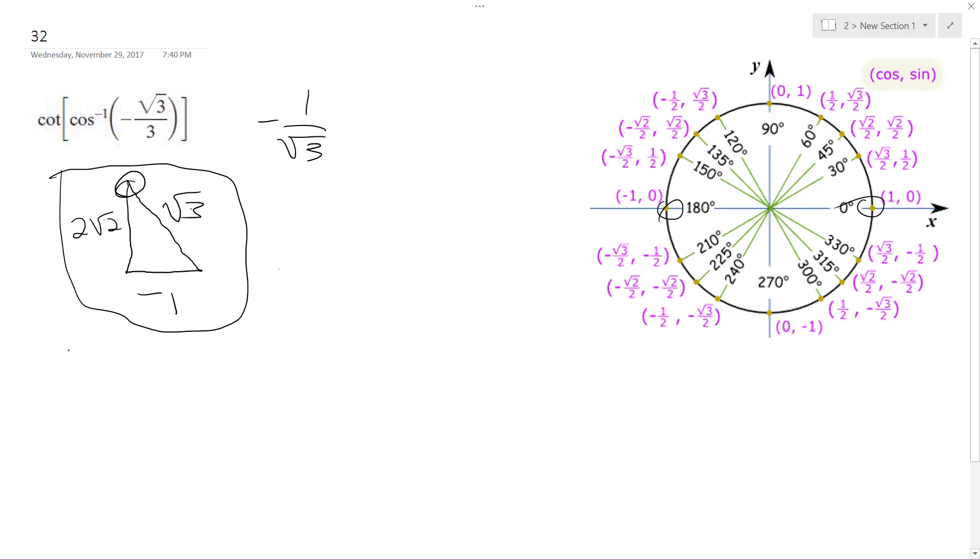Cotangent's equal to x over y, the reciprocal of the tangent, so it's going to be equal to negative one over two root two.